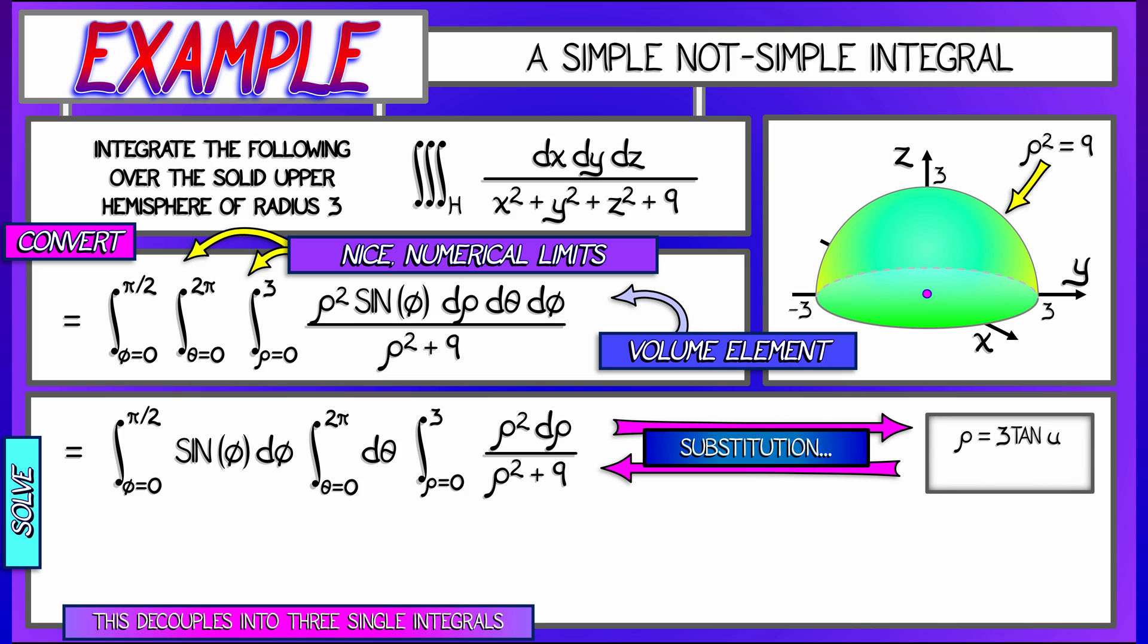Now for this, it's going to help to do a trigonometric substitution. I'm going to let rho equal 3 tan u, and then d rho is 3 secant squared u. Now I'm going to let you do the details on that one. That can get a little involved when we substitute that back in there.